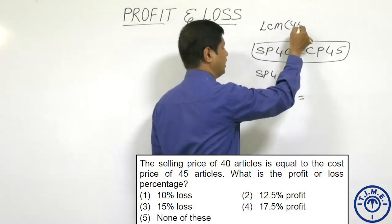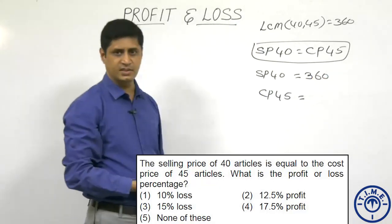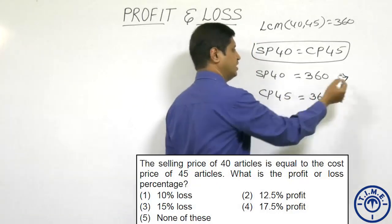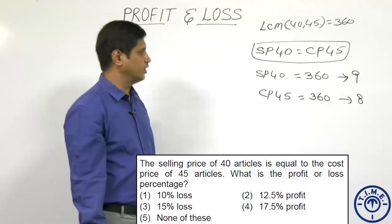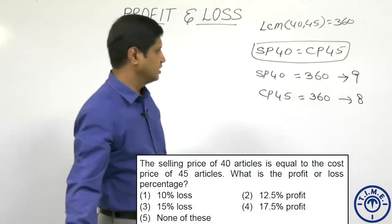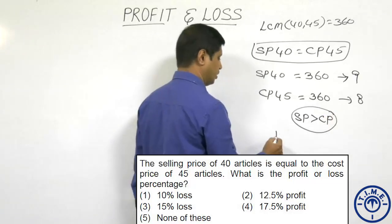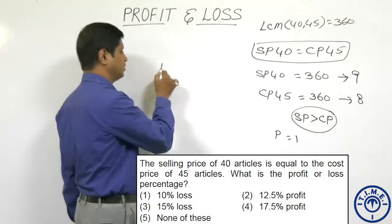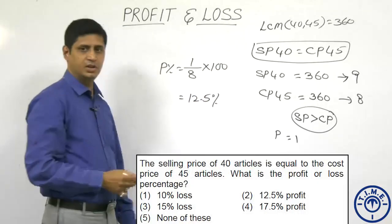The LCM of 40 and 45 is 360. The cost of one article is 360/45 = ₹8, and the selling price of one article is 360/40 = ₹9. To find profit or loss, we compare cost price and selling price of equal number of articles. The selling price is more than the cost price, resulting in a profit of ₹1. Profit percentage = profit/cost price × 100 = 1/8 × 100 = 12.5 percent. The right option is choice 2.